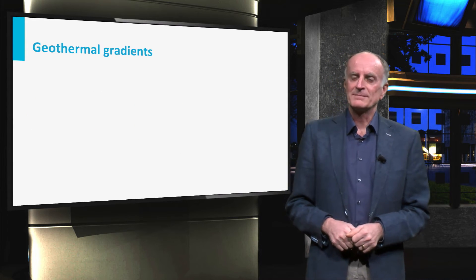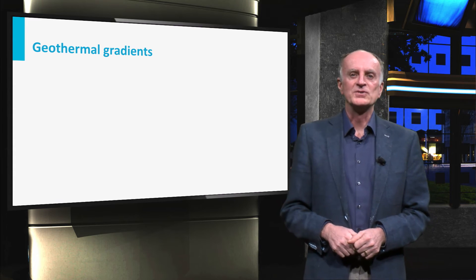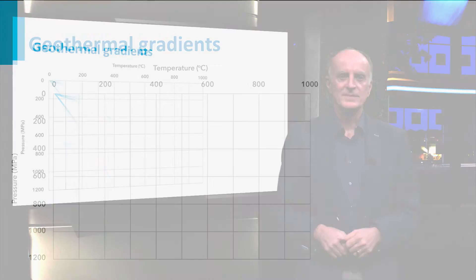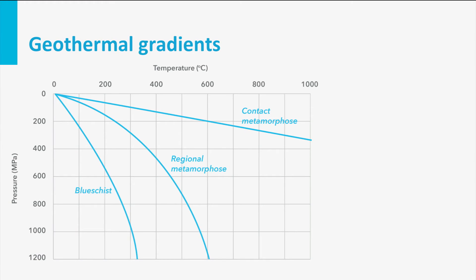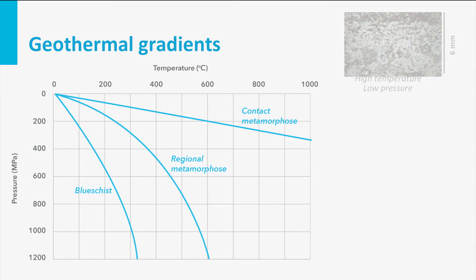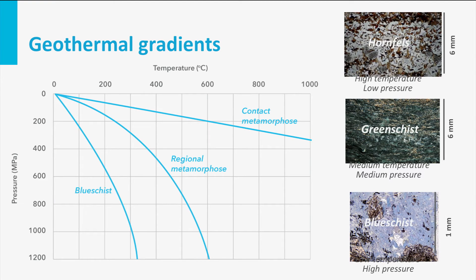Changes of temperature with depth are described by geothermal gradients. We defined a gradient characterized by high temperatures and low pressure — contact metamorphism — at the figure. We defined a regional one with intermediate values, called regional metamorphism, and one with very low temperatures even at high depths, named blue schists. Different types of metamorphism form under these different gradients.